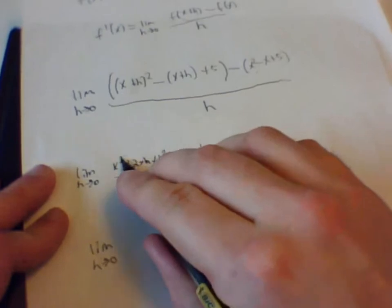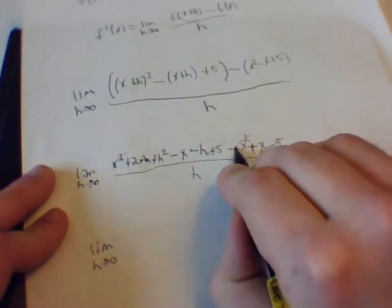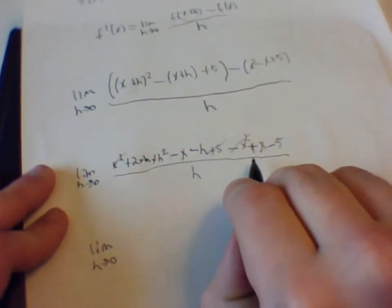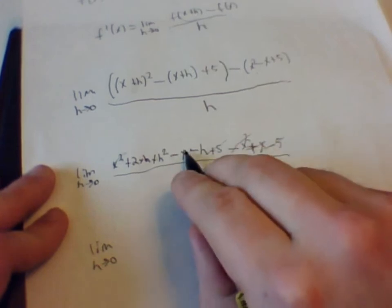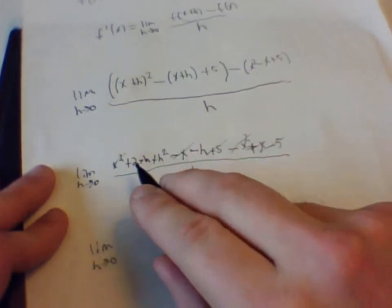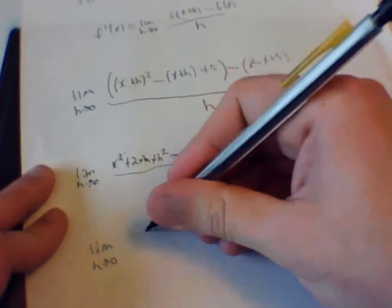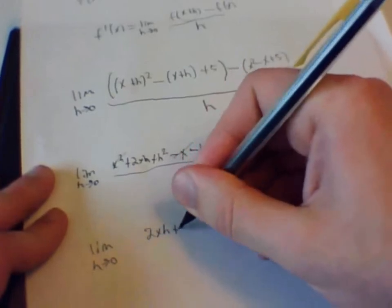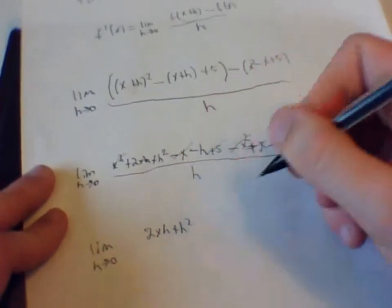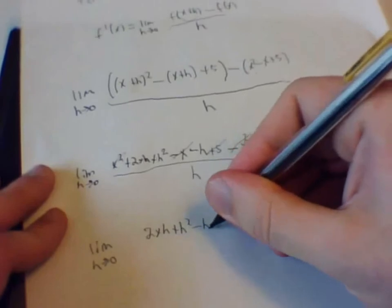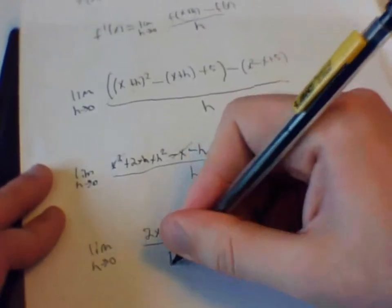The x squares. The x's. So we are left with 2xh plus h squared minus h all over h.